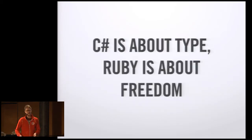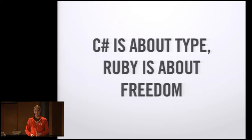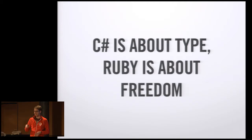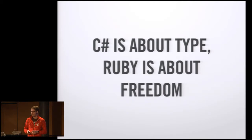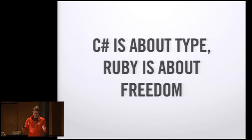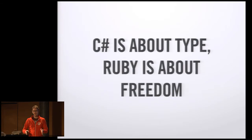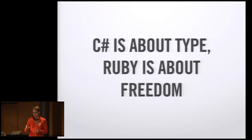Just in case you don't want to listen to me talk, basically all I'm going to tell you is how C# is really about types and type safety, and Ruby is more about freedom. In actual fact, when I first wrote this talk I was thinking about moving from the misery of C# to the joy of Ruby, which is actually nonsense because they're both quite fun to work in - it's just a very different way of thinking.